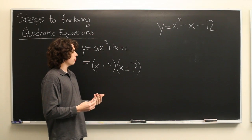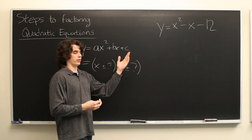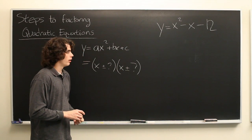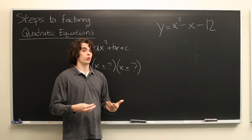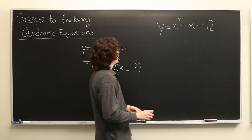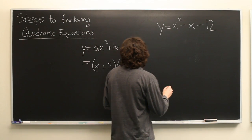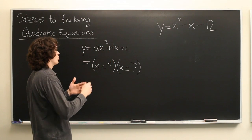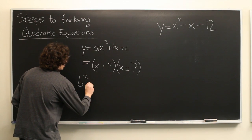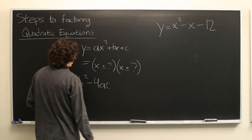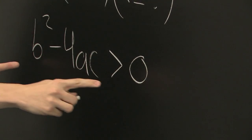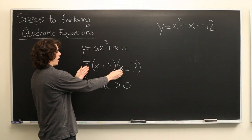First, it can be helpful to determine if it's actually possible to factor in such a way. Sometimes you'll be given a problem and told to assume that it is possible, but otherwise it won't always be obvious. One way of determining if a quadratic equation can be factored is to look at b squared minus 4ac — this must be greater than 0.